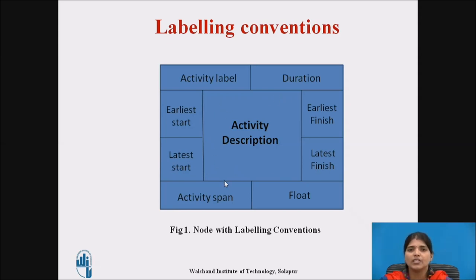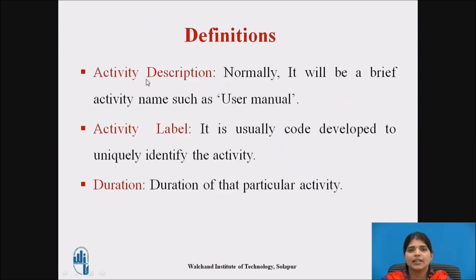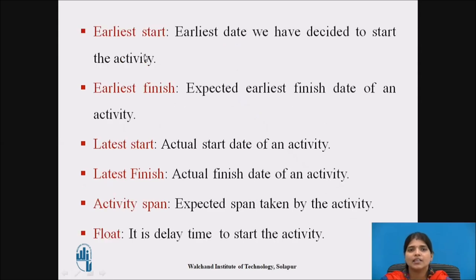Definitions of each component: activity description — describe the activity in short; activity label — give a label to the activity; duration — write down the duration of the particular activity; earliest start and earliest finish — these are the expected dates of the activity; latest start and latest finish — these are the actual latest start and finish dates of an activity; activity span — the expected span taken by the activity; float — the delay time available to start the activity.